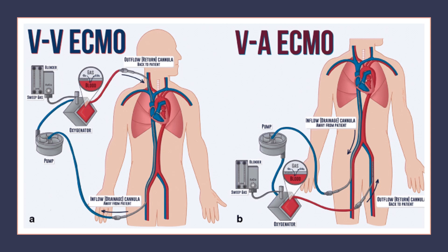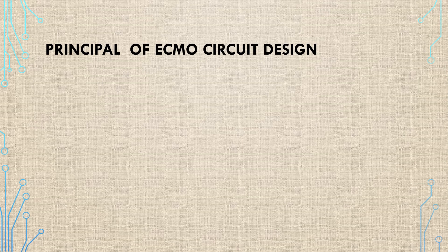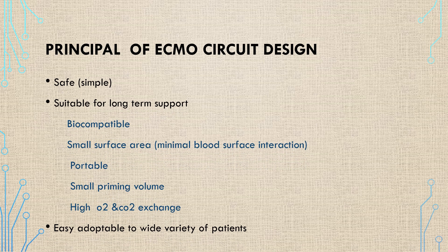The blood will come from the patient to the pump, and from the pump to the patient. There is no reservoir in the ECMO circuit. This is in contrast to cardiopulmonary bypass, which is used during cardiac surgery and has a large reservoir that drains venous blood from the circulation regardless of pump flow.